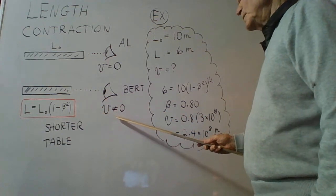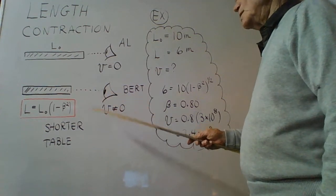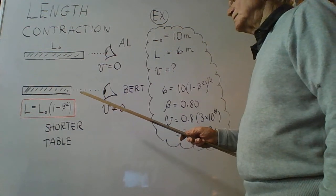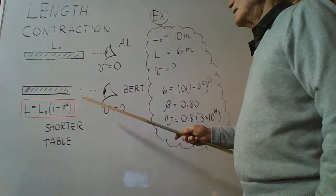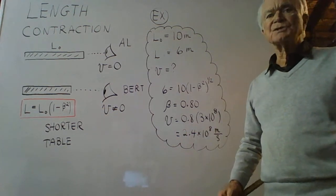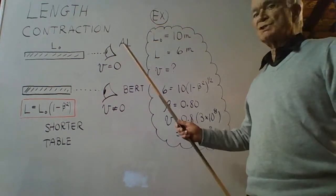Bert sees a length that, for him, is the absolute correct length, not an illusion. He isn't being deceived. He's not measuring a different length of the table because of faulty measuring apparatuses. No, his reality is true for him, just as Al's is for him.